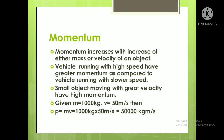Momentum increases with an increase of either mass or velocity of an object, because p = m × v. A vehicle running at high speed has greater momentum compared to a vehicle running at slower speed. Comparing a car and a cycle: the car has more mass and more velocity, so greater momentum, while the cycle has less mass and less velocity, so less momentum.